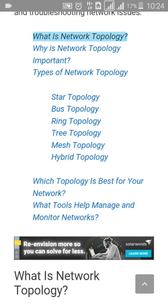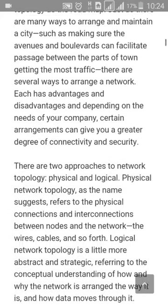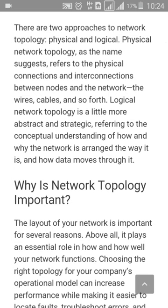Network topology refers to how various nodes, devices, connections, and networks are physically or logically arranged in relation to each other. There are two approaches to network topology: physical and logical. Physical network topology refers to the physical connections and interconnections between nodes and the network — the wires, cables, and so forth. Logical network topology is a more abstract form, referring to the conceptual understanding of how data moves through the network.